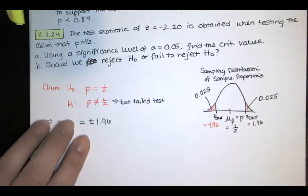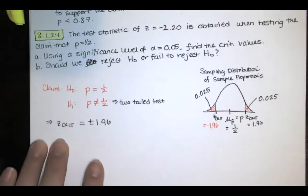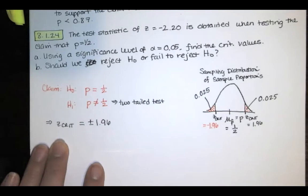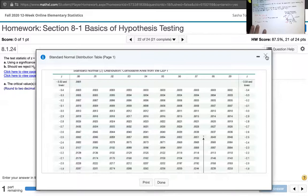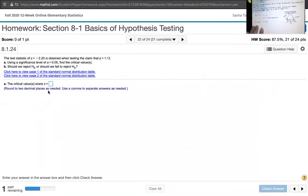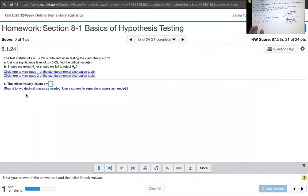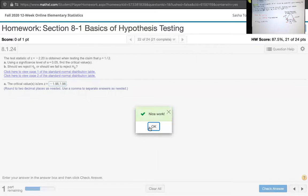Now, I think MyLab Statistics might want you to enter those as a comma-separated list. So let's go back to that screen and make sure we answer the question in the way that they want us to answer it. It says round to two decimal places as needed, use a comma to separate answers as needed. Okay, so that's what they want. So we'll have negative 1.96 and positive 1.96.